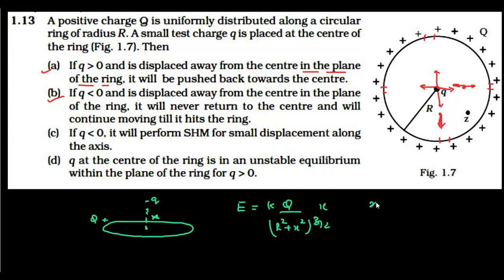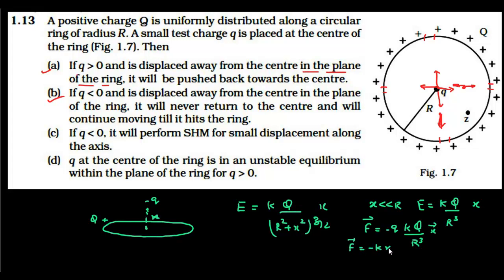For small displacement, x is much less than R, so we can write E = kQ / R³ · x. The force on the negative charge at separation x is F = qE = kQ / R³ · x. Since the charge is negative, the force is directed opposite to the displacement — this matches the form F = −kx, which is the equation of simple harmonic motion.